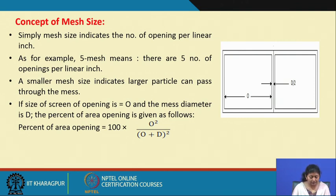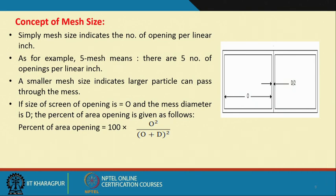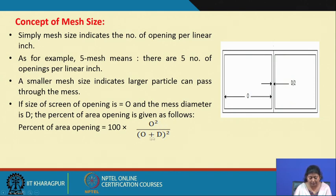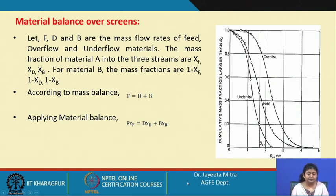If the size of the screen opening is O and the mesh wire diameter is D, the percent area opening is given by: percent area opening = 100 × O² / (O + D)². So O² divided by (O + D)² times 100 gives us the percentage area opening.